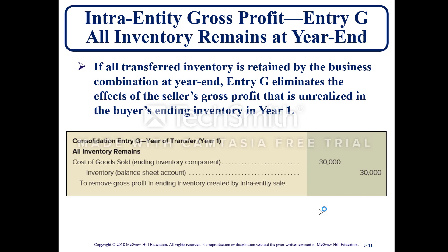If all transferred inventory is retained by the business combination at year-end, entry G eliminates the effect of the seller's gross profit that is unrealized in the buyer's inventory in year one. Here you have a debit to cost of goods sold for $30,000 and a credit to inventory on the balance sheet to remove the gross profit in any inventory created by the intra-entity sale. Because there was a profit, you have to do entry TI and now entry G to eliminate the profit.